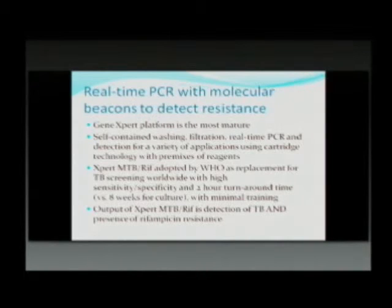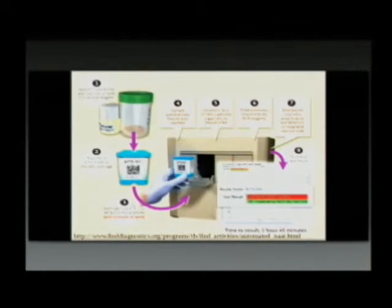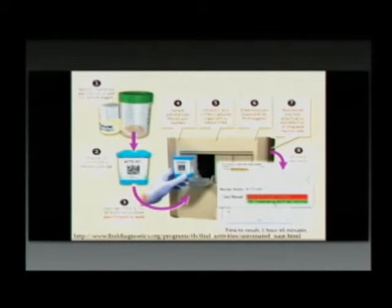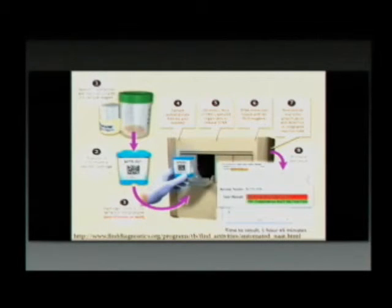The output of Xpert MTB/RIF is detection of tuberculosis and the presence of rifampicin resistance. You transfer the sputum into the cartridge — that is the end of your hands-on work. The sample is then automatically filtered, washed, extracted by ultrasonic lysis, mixed with dry PCR reagents, and detected. A typical result reads 'MTB detected, rifampicin resistance not detected.' Time to result is less than two hours — approximately one hour and 45 minutes. Because there is minimal handling of the organism, there is less risk for the lab technician, compared to growing cultures which require biosafety level 2+ facilities.